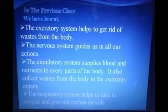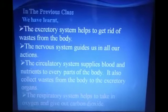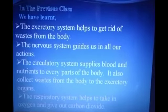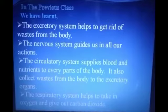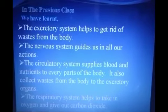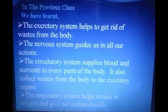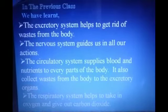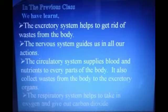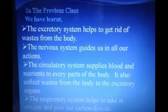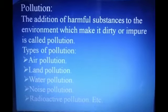The nervous system guides us in all our actions. The circulatory system supplies blood and nutrients to every part of the body and also collects waste from the body to the excretory organs. The respiratory system helps to take in oxygen and give out carbon dioxide.